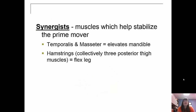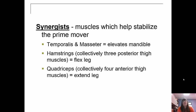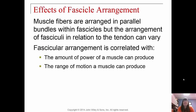Synergists are muscles that help stabilize the prime mover — for example, the temporalis and the masseter muscles help elevate the mandible. The hamstrings are three muscles in your posterior thigh that flex the leg, and the quads are four anterior thigh muscles that extend the leg. Muscle fibers are arranged in parallel bundles within fascicles, but the arrangement of these fascicles in relation to the tendon can vary, affecting the amount of power and range of motion a muscle can produce.